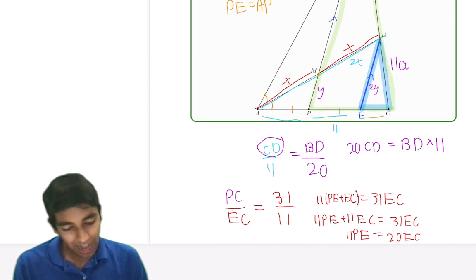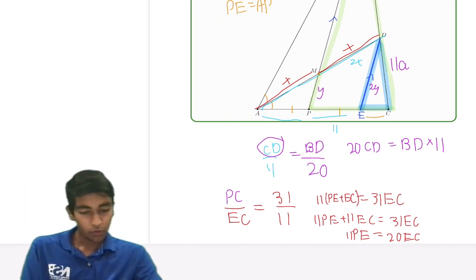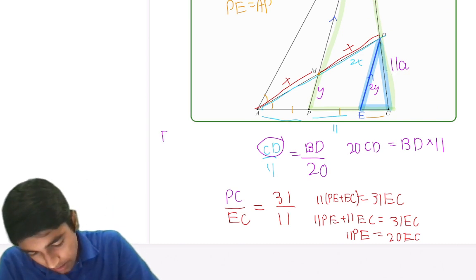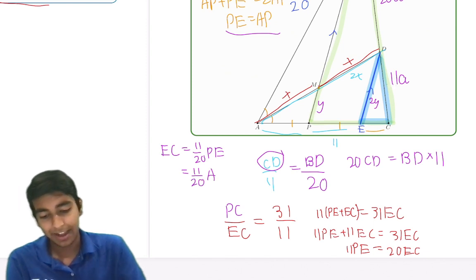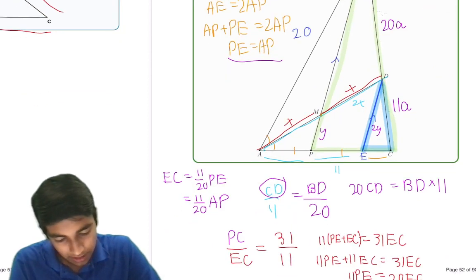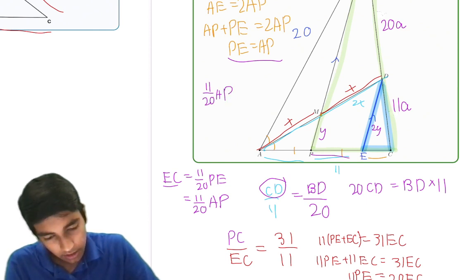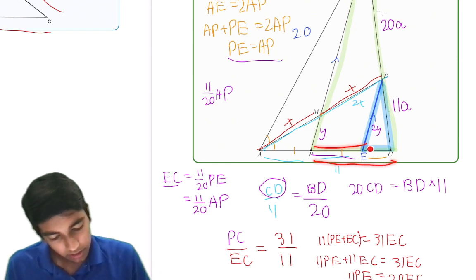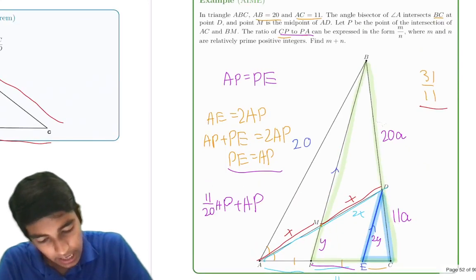So now we found EC in terms of PE. Because we have 11PE is 20EC, that means that EC is 11 over 20 PE. And remember, we have PE equals AP from above. So this is also 11 over 20 AP. So what is the question asking? CP to PA. CP is CE, or EC, which is 11 over 20 AP, CP plus PE. Because we can break up PC into two parts. And PE is just AP. So plus AP, divided by PA, or AP.